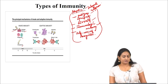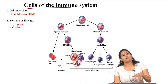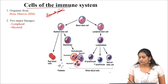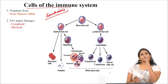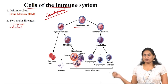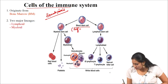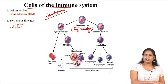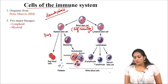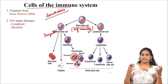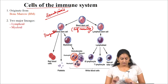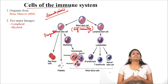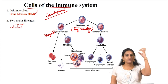Now we will look at the cells of the immune system. This picture shows the process of hematopoiesis — the formation of blood cells. Any blood cell originates from the hematopoietic stem cell, which is a self-renewing cell. These self-renewing cells give rise to either myeloid progenitor cells or lymphoid progenitor cells. Progenitor cells lose their self-renewing capacity and become specific to a particular cell lineage. Hematopoiesis takes place in the bone marrow.